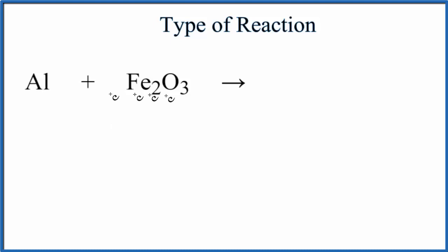So we look at this equation here. We have a metal, aluminum, and then we have another metal here, iron, that's bonded to the oxygen. So we're thinking that this aluminum might be able to replace the metal, and that would make it a single replacement reaction.